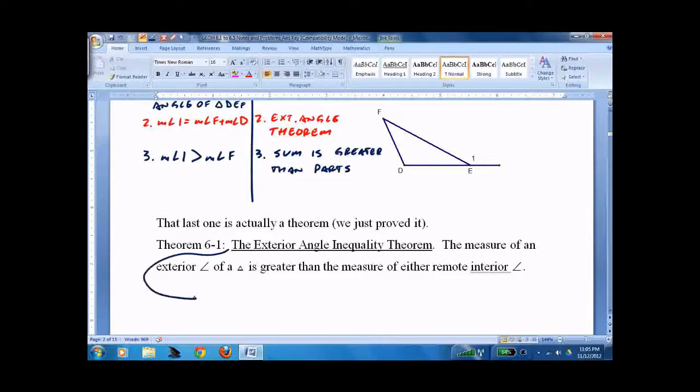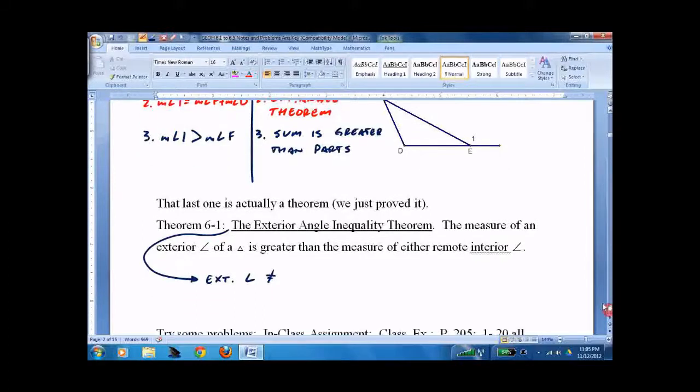Simply says, I have an external angle. It's bigger than either one of the other two internal angles of a triangle. Well, not this one, necessarily. But definitely these other two. That's it.